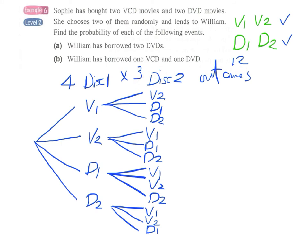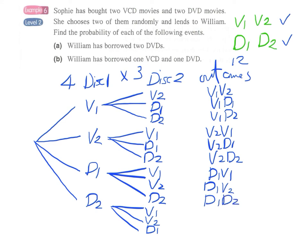Again we write down all the possible outcomes one by one. So V1V2, V1D1, V1D2, V2V1, V2D1, V2D2, D1V1, D1V2, D1D2, D2V1, D2V2 and D2D1.